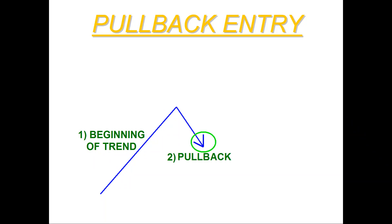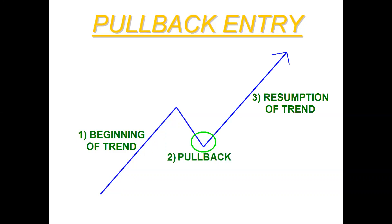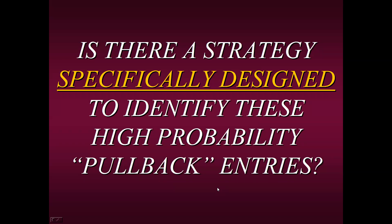Our method will generate a buy signal at a particular level along with money management, along with several different types of entries and exits. Pullback entries are meant to buy at these lower sell-offs where everyone else is getting out — and that's where you get back in. The only trouble is, how do we know it's going to stop at these levels, or how do we know it's going to continue going lower? That's the beauty of this particular method. Is there a strategy specifically designed to identify these high probability pullback entries? Yes, there is. This is what we're going to be talking about today.